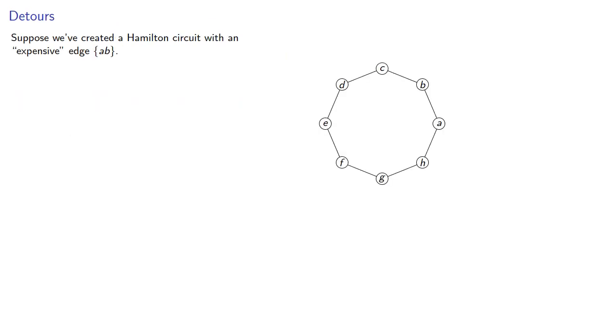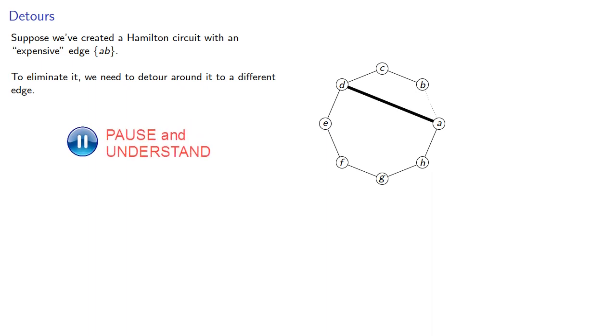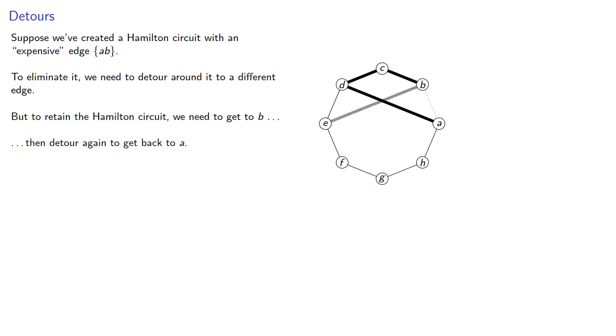Suppose we've created a Hamilton circuit with an expensive edge like AB. To eliminate it, we need to detour around it to a different edge. But to retain the Hamilton circuit, we need to get to B, then detour again to get back to A.